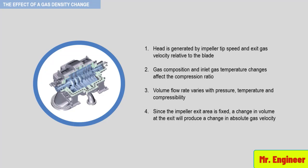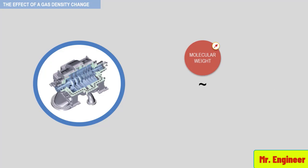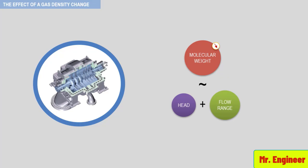A summary table will be presented which shows the change of head and the limits of the compressor curve for condition changes of molecular weight and temperature. Also shown is the change of velocity relative to the blade at the exit. You will see that an increase in molecular weight will result in increasing head and a smaller flow range, while a decrease in molecular weight will decrease head and produce a greater flow range. On the other hand, increasing temperature will decrease head and increase the flow range, and decreasing temperature will increase head and reduce the flow range.